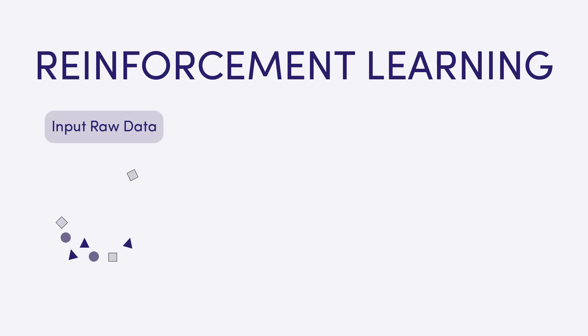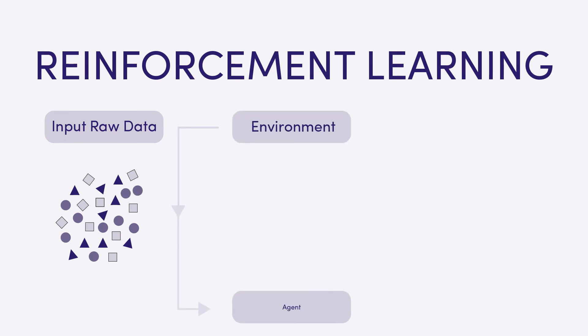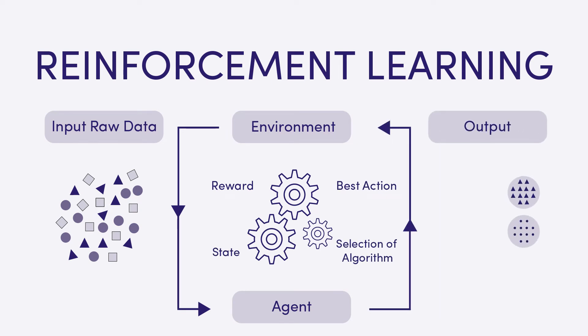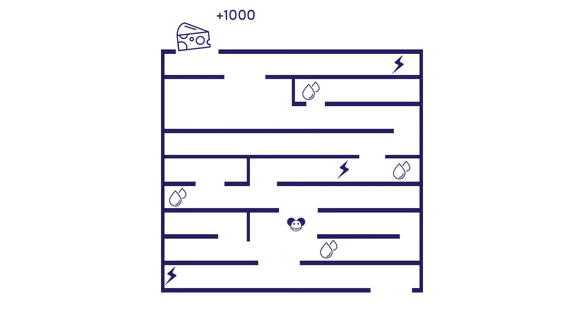In reinforcement learning, the algorithm — in this context often referred to as an agent — learns through trial and error, using feedback from its own actions. Rewards and punishment operate as signals for desired and undesired behavior. The best context to understand reinforcement learning is in a game with a clear objective and a point system. Imagine a game setup in which a mouse (the agent) tries to maximize its rewards in a maze. At the end waits a final reward of an extra 1000 points (cheese); along the way there are lesser rewards like water worth 50 points, as well as electric shocks resulting in minus 100 points. Through rewards and punishment, the mouse gets positive and negative feedback and learns from its own experience.